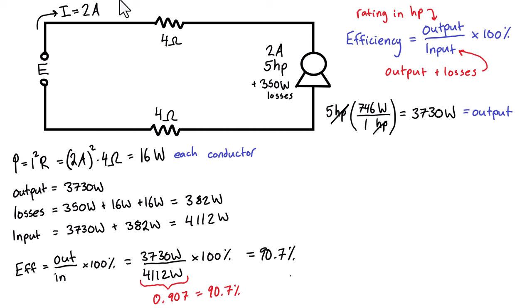But that's how you calculate the circuit efficiency. You have to take into consideration the losses of the motor itself and the losses of the rest of the circuit, usually being the conductors. Line losses in the conductors or if there's something else specified in the problem, then you'll need to take care of that as well.